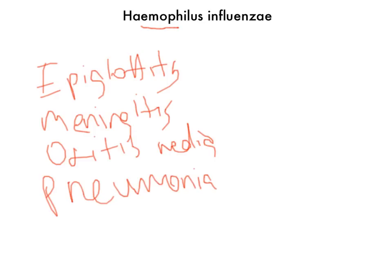A couple of interesting things: you need to grow it on a chocolate agar plate with factors 5 and 10. However, you could grow it on a chocolate agar plate with factor 10 along with Staph aureus, which cleaves the blood cells — it's a beta-hemolytic organism — to give you factor 5. So Staph aureus cleaves the blood cells to give you factor 5, and you already have factor 10 on the chocolate agar.